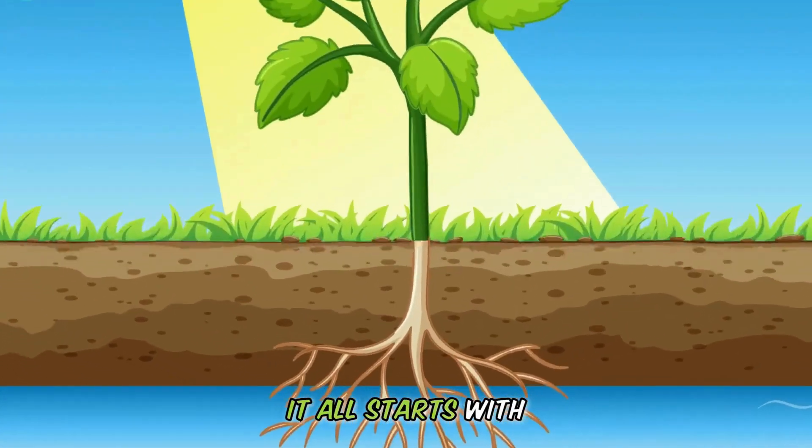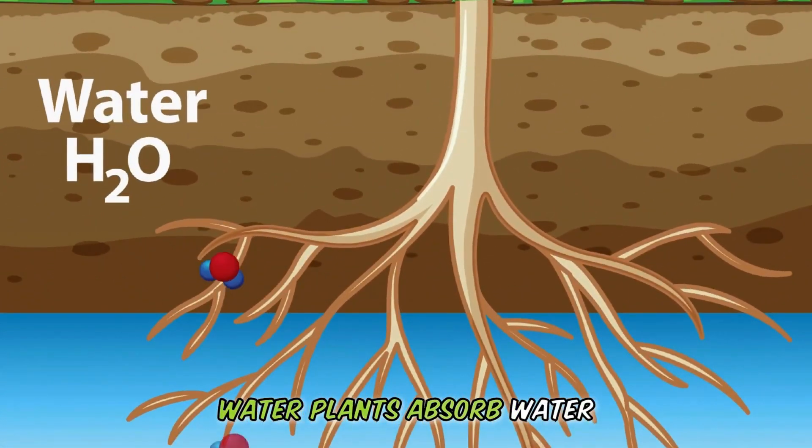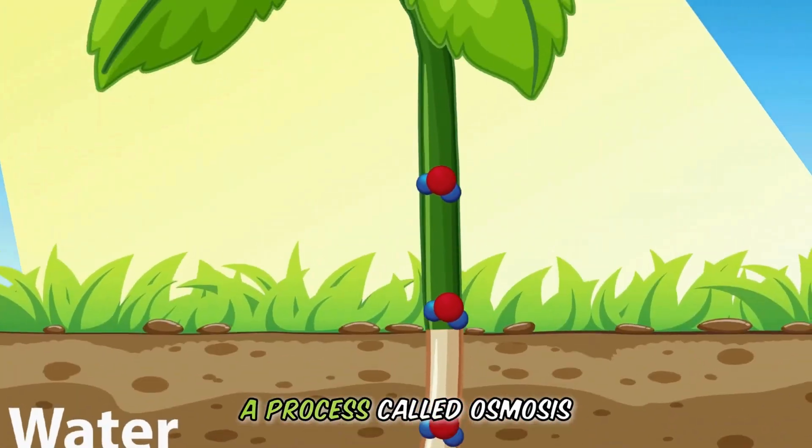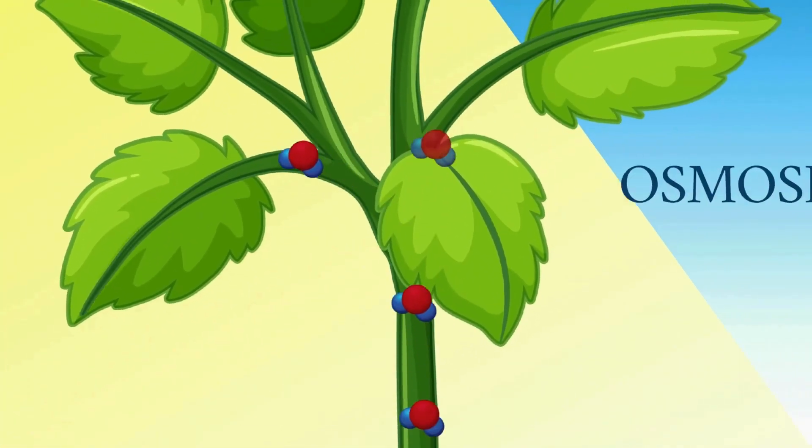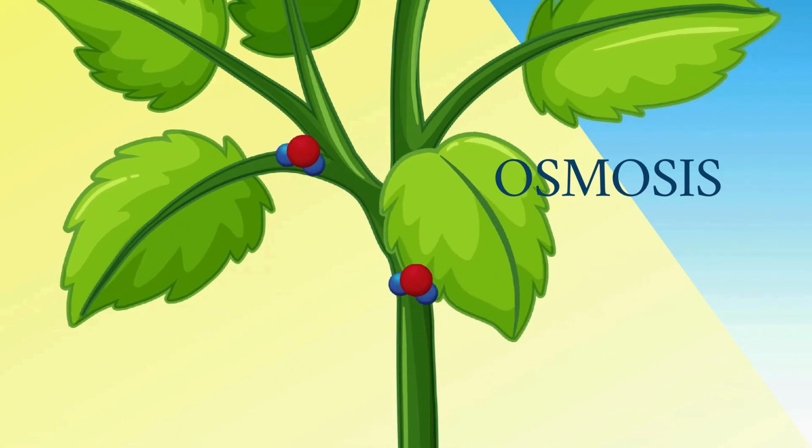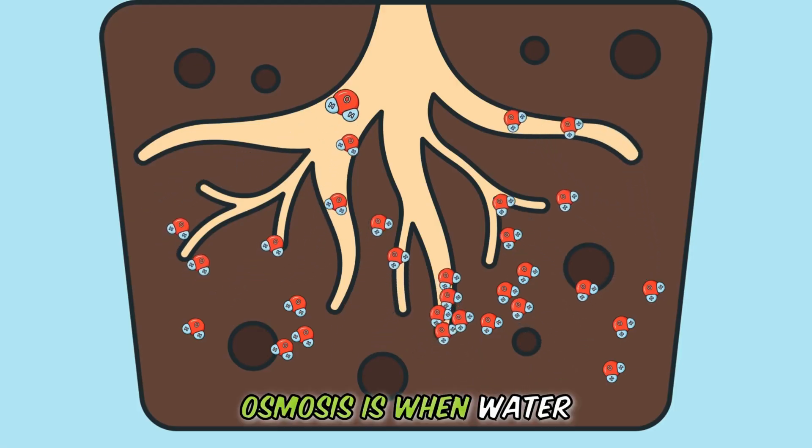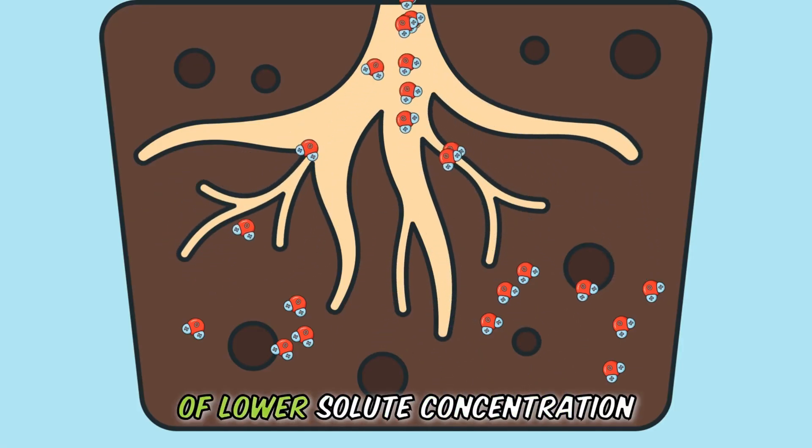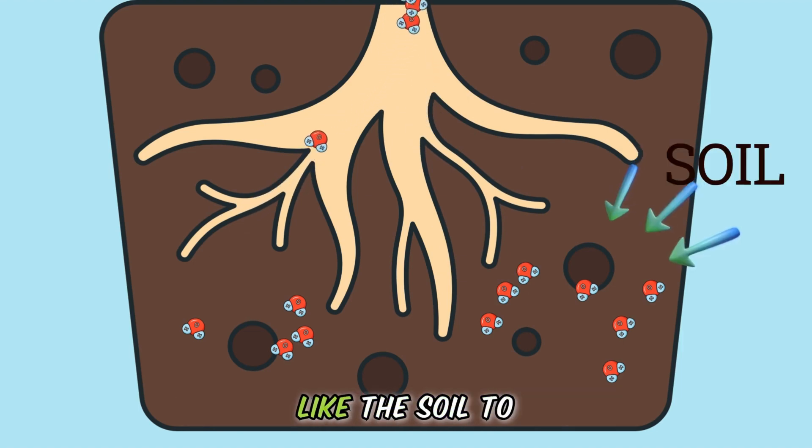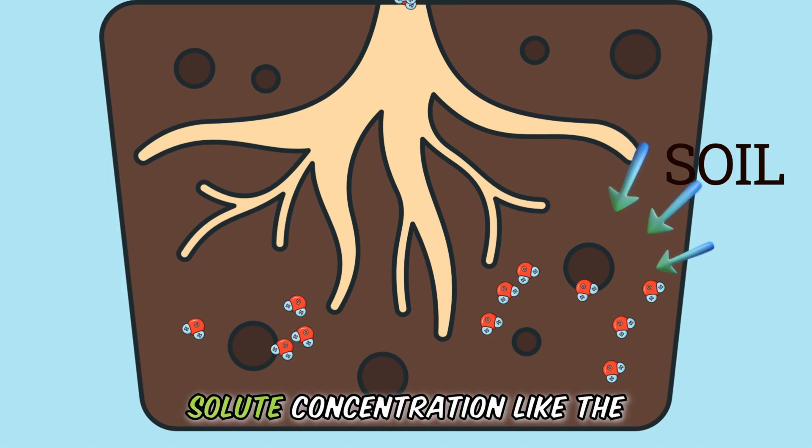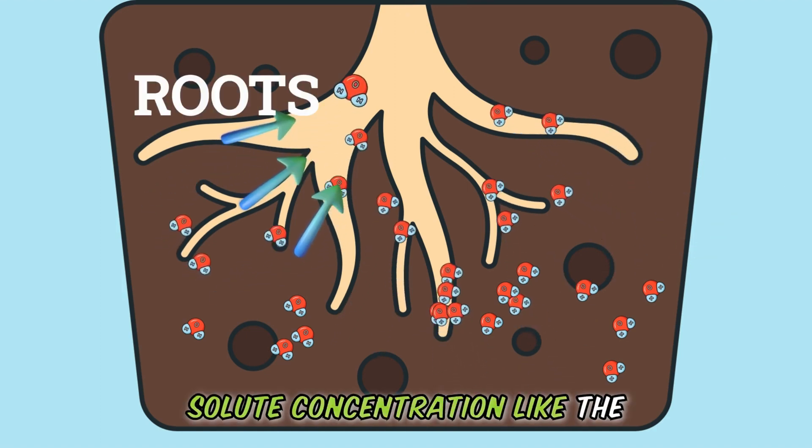It all starts with water. Plants absorb water through their roots up to their leaves by a process called osmosis. Osmosis is when water moves from an area of lower solute concentration, like the soil, to an area of higher solute concentration, like the roots.